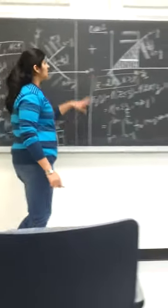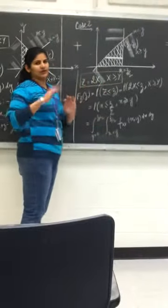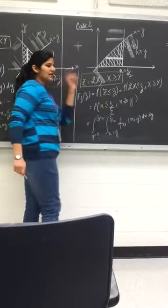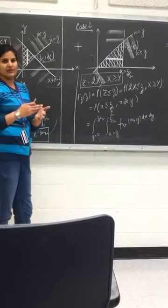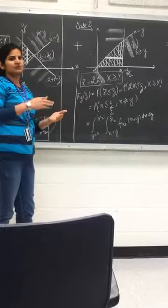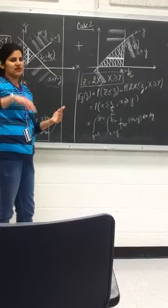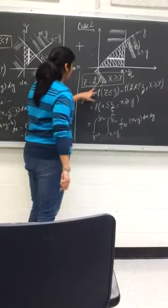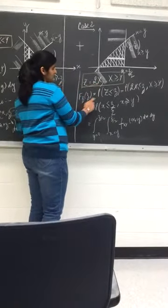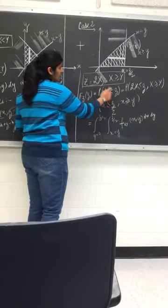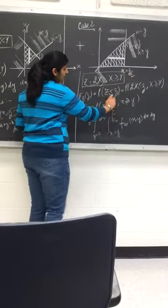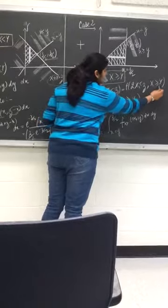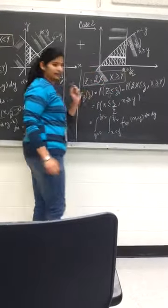Our second case is when x is greater than or equal to y. When x is greater than or equal to y, the maximum of x or y is x. So our Z is x plus maximum of x or y, which is x again, giving Z equals 2x. We again compute F_Z of z as the probability of Z less than or equal to z, where Z is 2x, so the probability of 2x less than or equal to z, with the condition that x is greater than or equal to y.